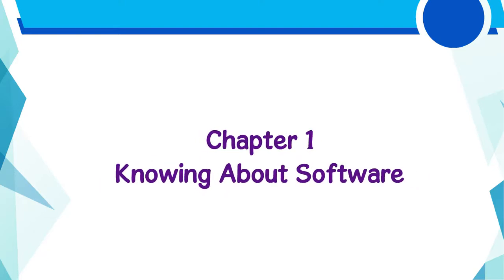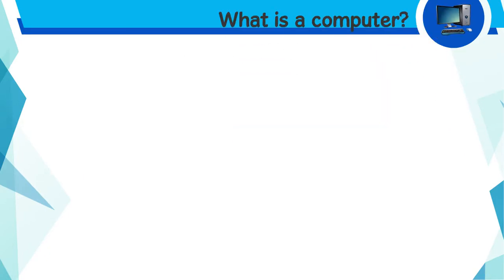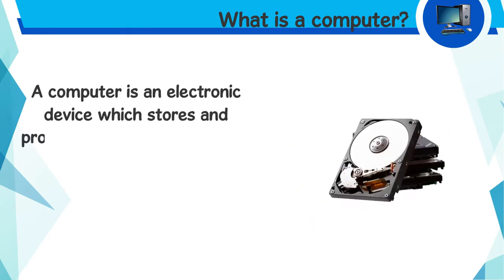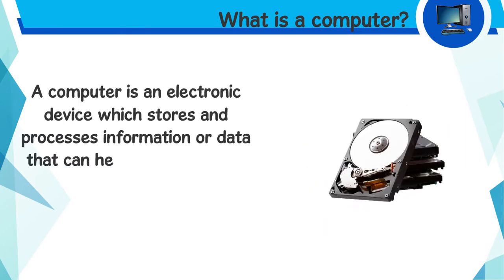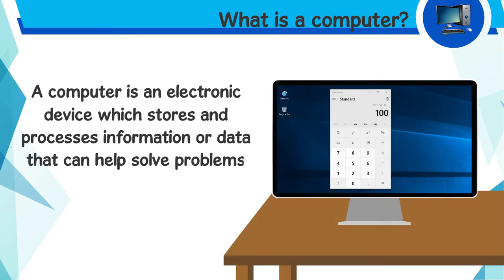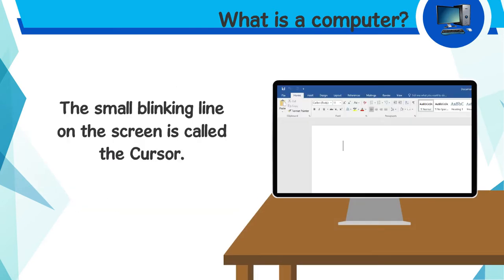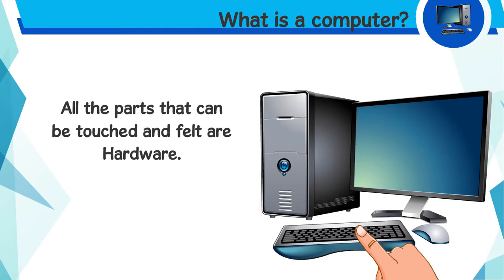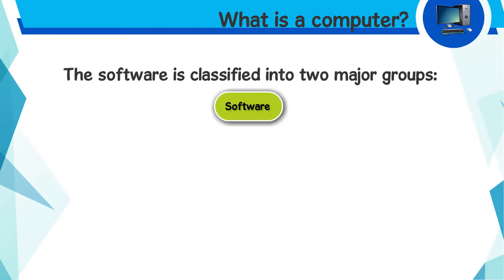Chapter 1: Knowing About Software. What is a computer? A computer is an electronic device which stores and processes information or data that can help solve problems quickly and accurately and give meaningful results. The small blinking line on the screen is called the cursor. All the parts that can be touched and felt are hardware.